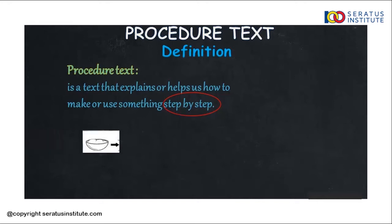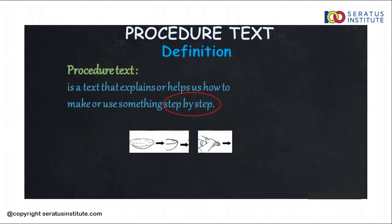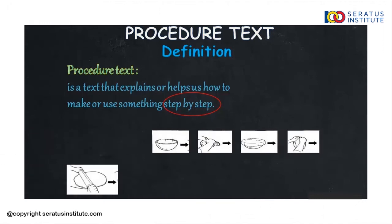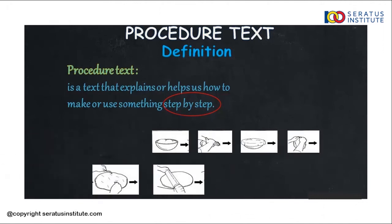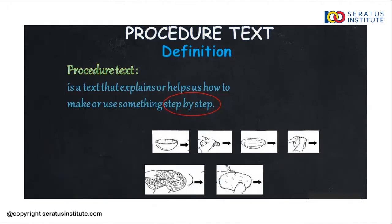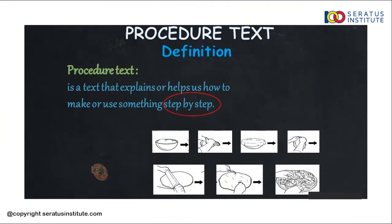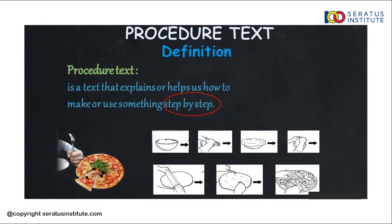This is the example of procedure text: how to make a delicious pizza. Hmm, yummy!